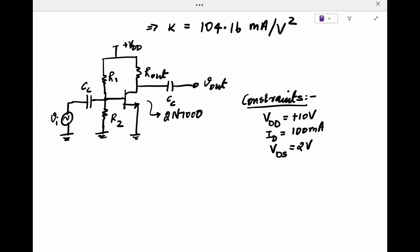To actually build a practical amplifier, we need some constraints in terms of available supply voltage, max current we can use from the power supply, etc. And these requirements can depend on the project. For this video, I have chosen a VDD of 10 volts, ID of 100 milliamps, and operating VDS of 2 volts.